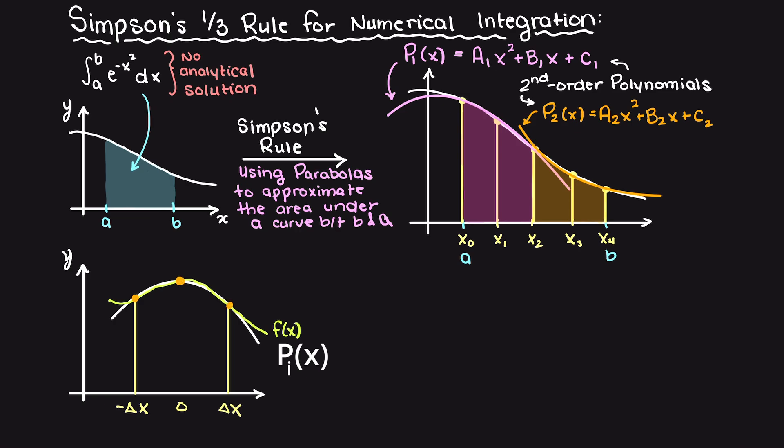So let's imagine a general parabola, pi of x, over the bounds minus delta x to plus delta x, over which we are approximating the definite integral of f of x, which we are going to be solving for this yellow area here.